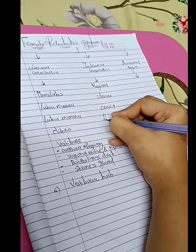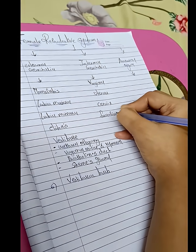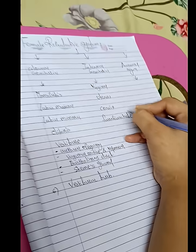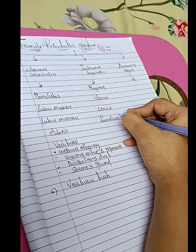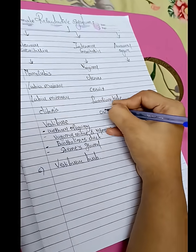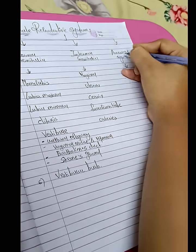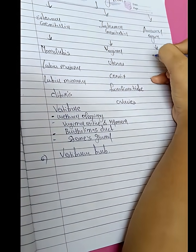Cervix, fallopian tube. Fertilization occurs in the fallopian tube in the ampulla. Then ovaries. An accessory organ is breast.